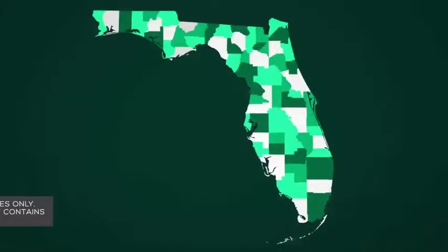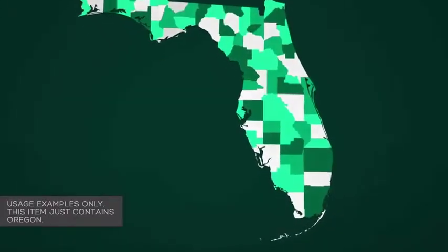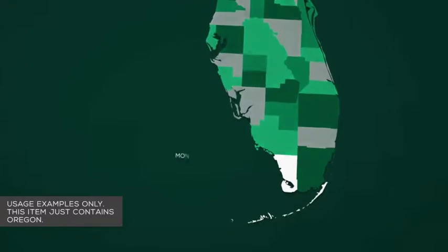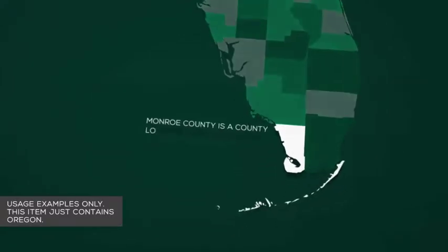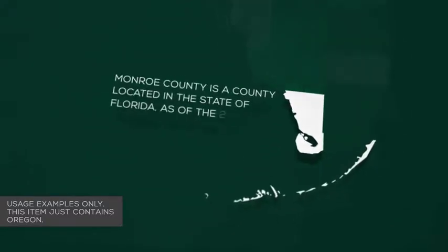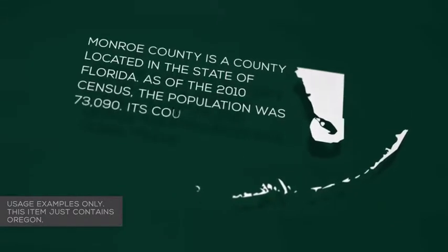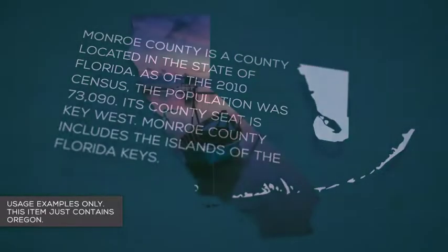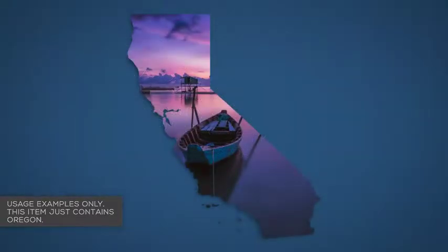Zoom in to areas of interest and hide the layers you don't need to focus on certain counties. Animate individual counties and add your own text and camera moves as required.